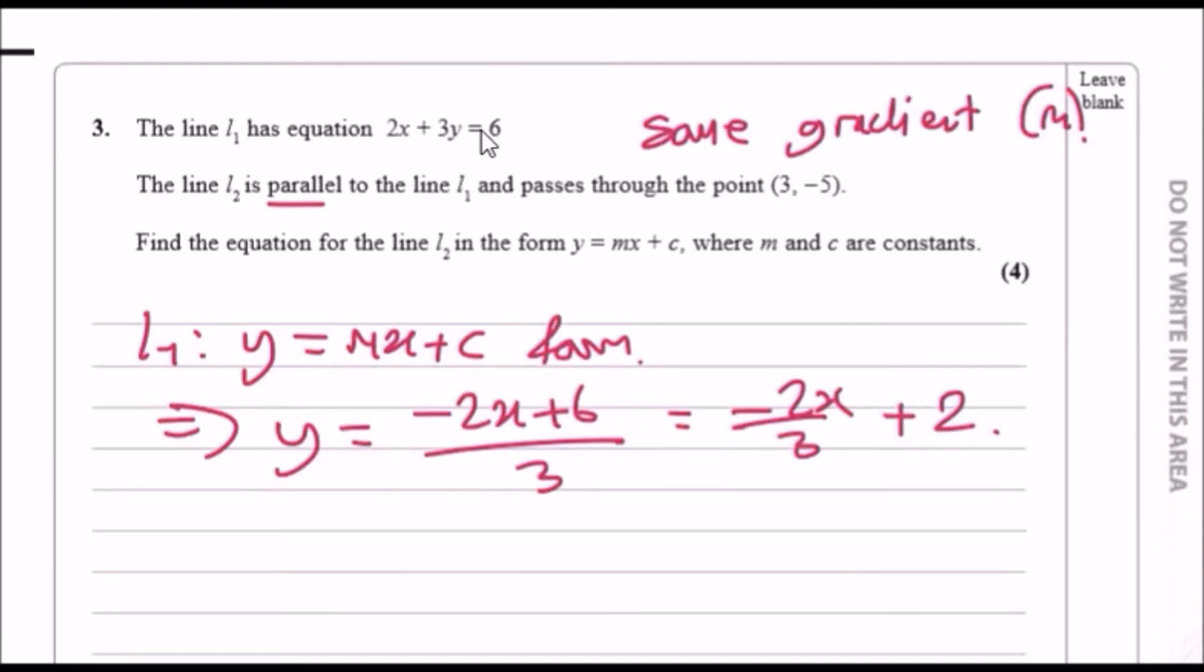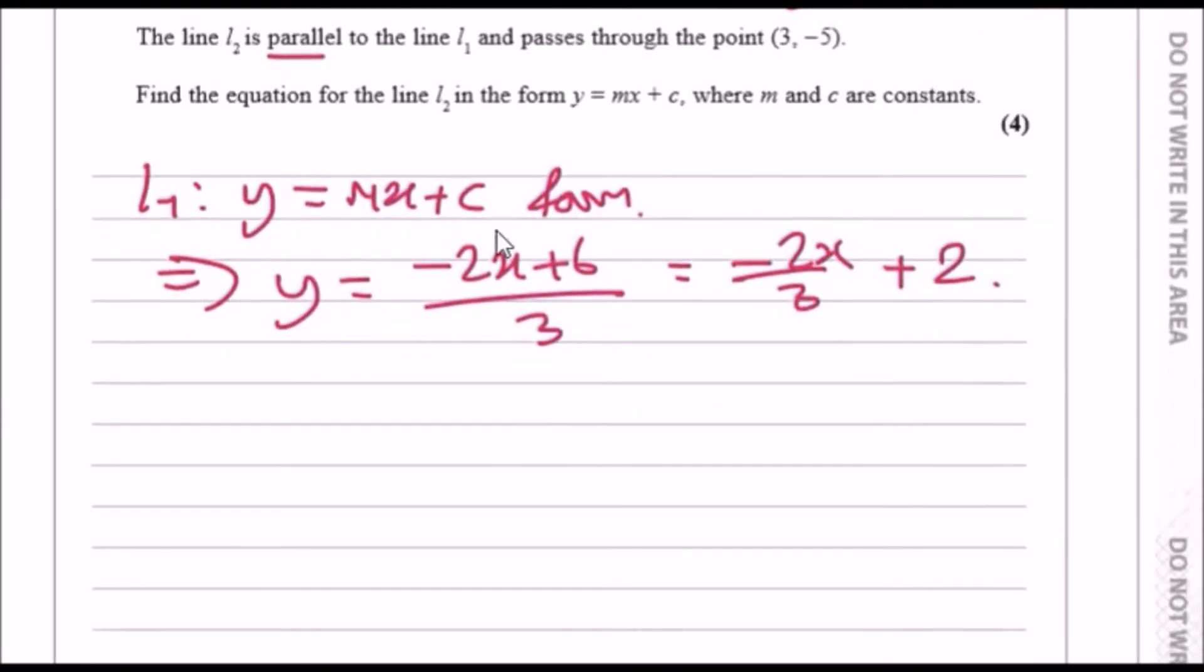Given that they're both parallel, this means that the gradient value negative 2 thirds is the same. So immediately we can start by saying line l2 is y equals minus 2 over 3x plus c.